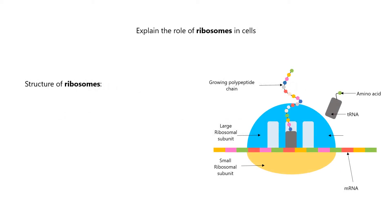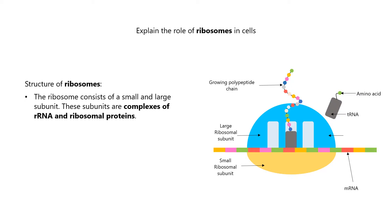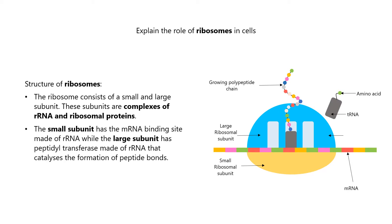Firstly, let's look at the ribosome's structure. The ribosome consists of a small and large subunit. These subunits are complexes of rRNA and ribosomal proteins. The small subunit has the mRNA binding site made of rRNA, while the large subunit has peptidyl transferase made of rRNA that catalyzes the formation of peptide bonds.